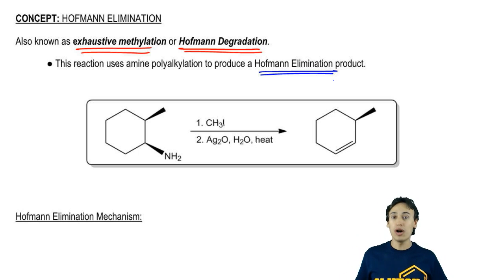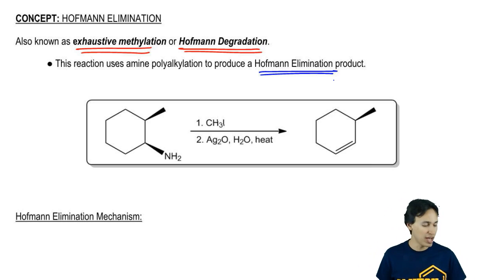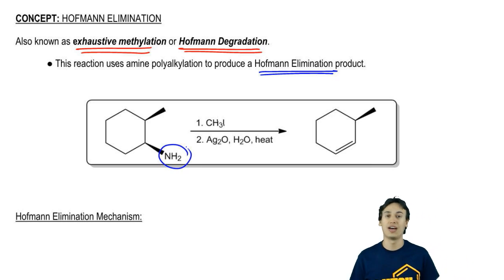In Organic Chemistry 1, we learned that alcohols can be eliminated, dehydrated to form double bonds. That was actually a reaction called dehydration. In the same way, amines can too, but they need to be turned into a good leaving group because amines as they are, if you were just to kick off an NH2 negative, terrible leaving group. That's like the strongest base ever.